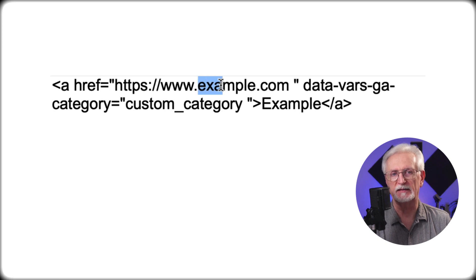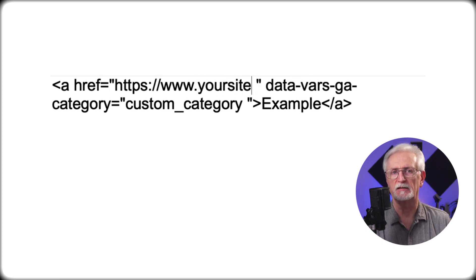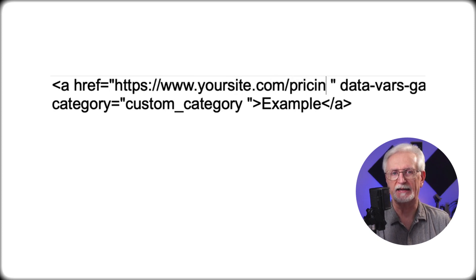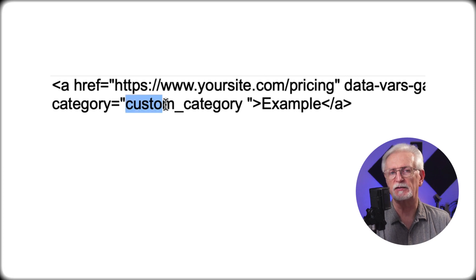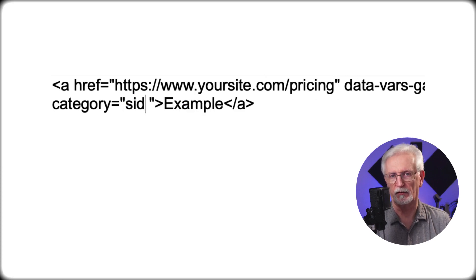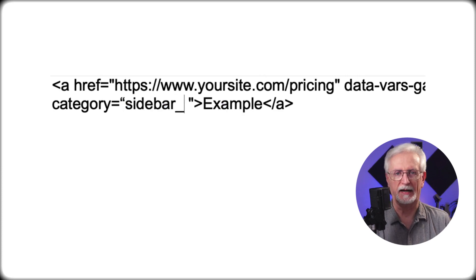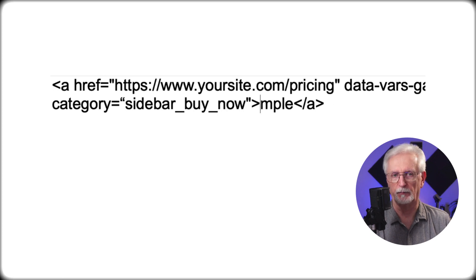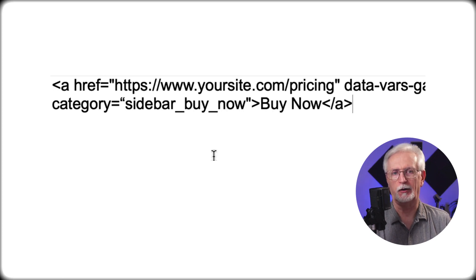First I'm going to replace this with the link, so I'm going to change it to something like this. Next, I'll change Custom Category to Sidebar Buy Now — make sure you keep the quotation marks. Now our code looks like this.